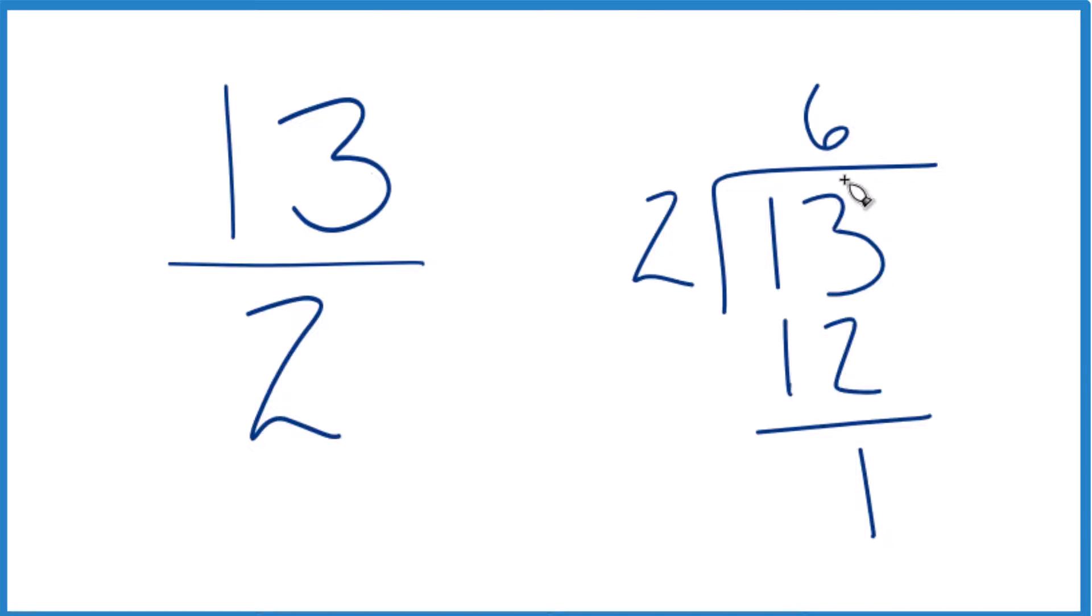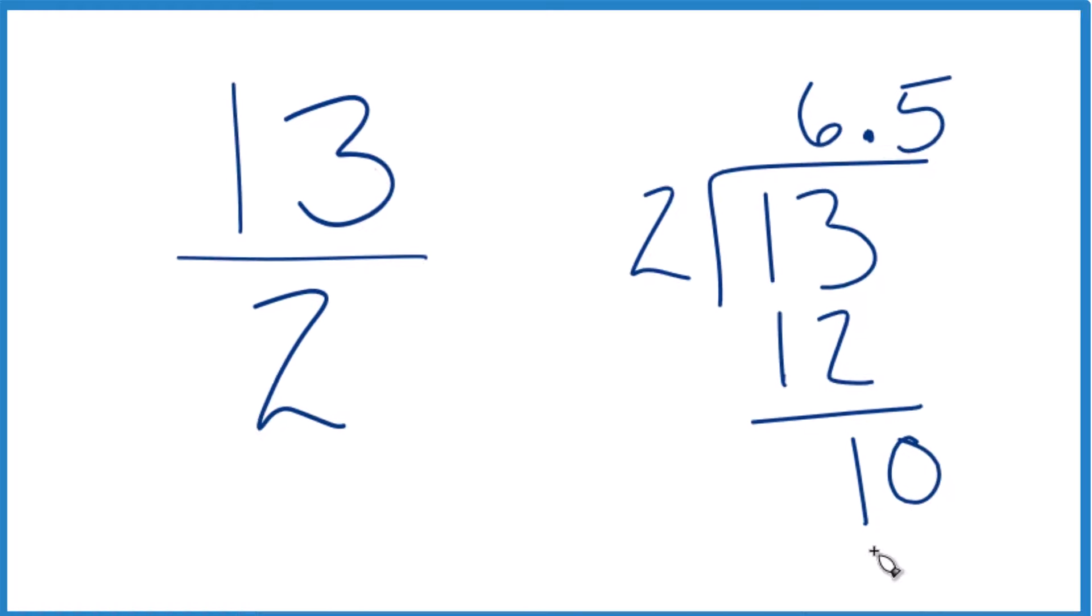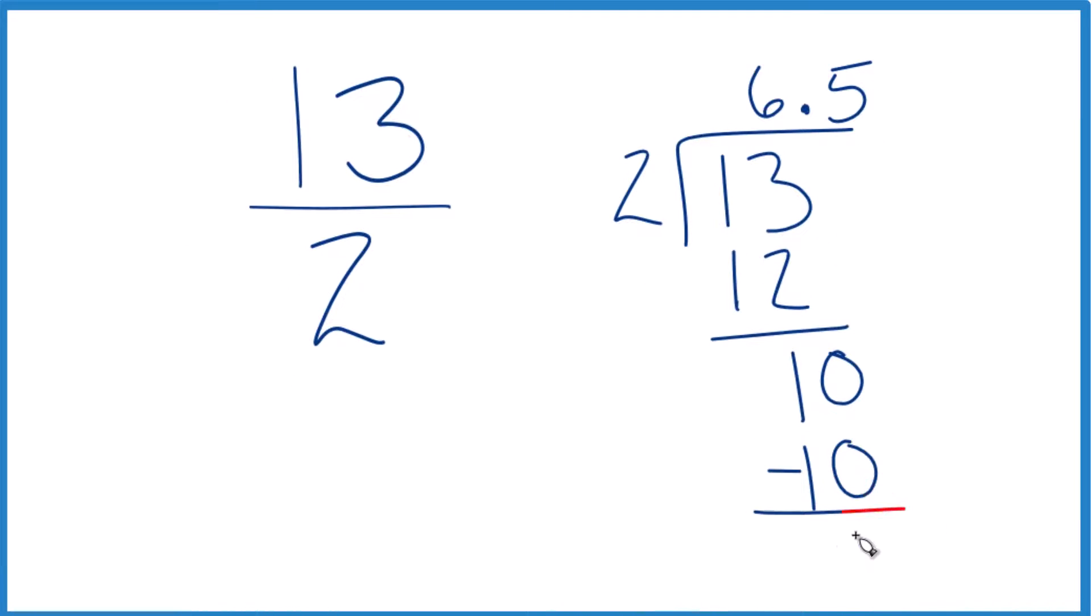So 2 doesn't go into 1, but we could put a decimal point right here, and then we could call this 10. And now 5 times 2, that's 10, subtract, no remainder.